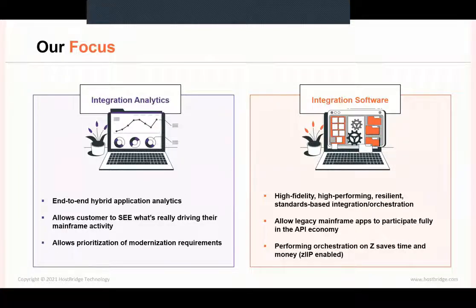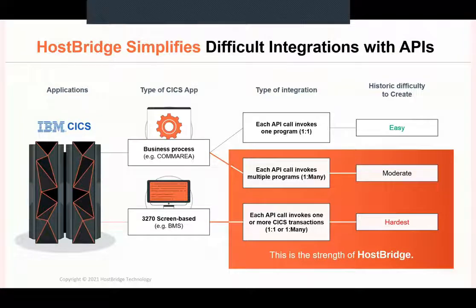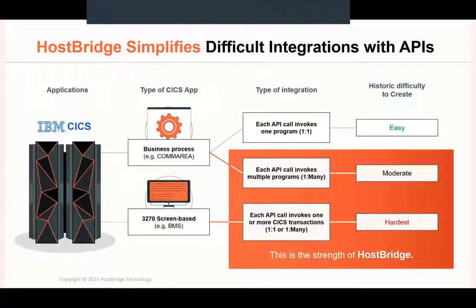The demonstration James will do will show how we use our JavaScript engine to create these APIs. Host Bridge does the hard stuff. It's easy to take a common area program or a channels container program running inside CICS and turn that into a callable service. But it's hard to take 3270 transactions — transactions only meant to run at a terminal — and take a business process running in that environment and turn it into a callable service without making any changes to the application on the host, and without doing screen scraping. We do the easy stuff too, but we also do the hard stuff. If you've got hard integration to do to CICS on the host, we're your solution.